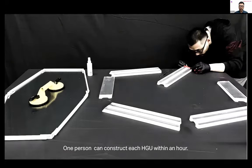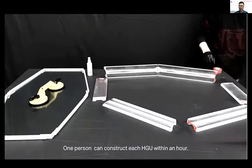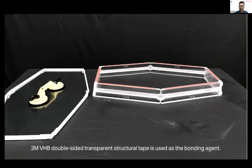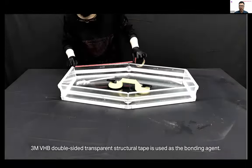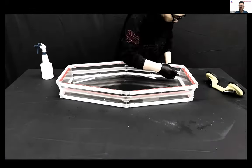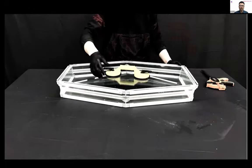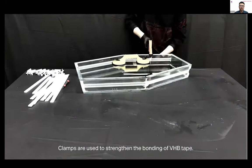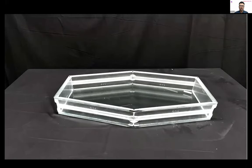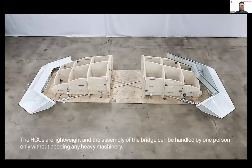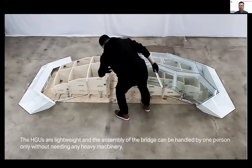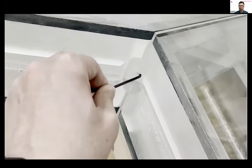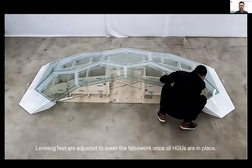The construction of the hollow glass unit can be handled by just one person. Here we're showing the largest module in this whole bridge, which weighs about 30 kilograms and can be easily handled by one person. The assembly of the whole bridge can also be done by one person due to the lightweight construction system.